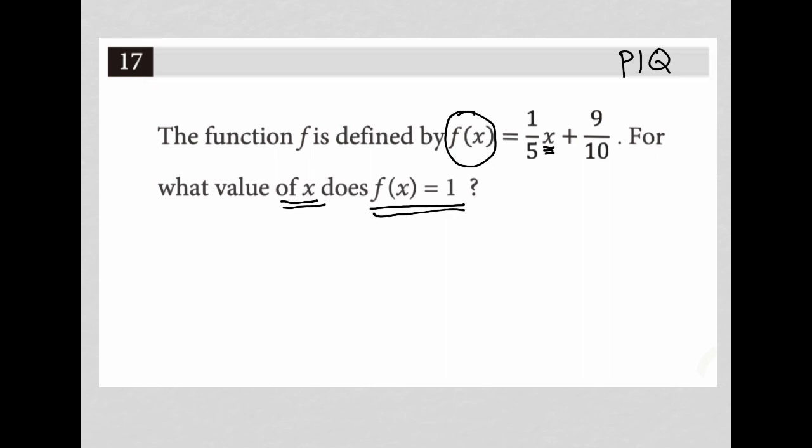I'm going to use what was given. So I'm going to take this f of x equals one-fifth x plus nine-tenths and instead say, well, the question told me that f of x is equal to one. So this should be one equals one-fifth x plus nine-tenths.